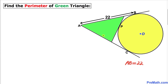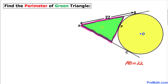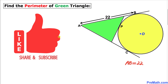Welcome to pre-math. In this video lesson, we have a circle with center O such that points B, C, and P are points of tangency. This line segment AB is 22 units, and we are going to calculate the perimeter of this green triangle by adding all three sides.